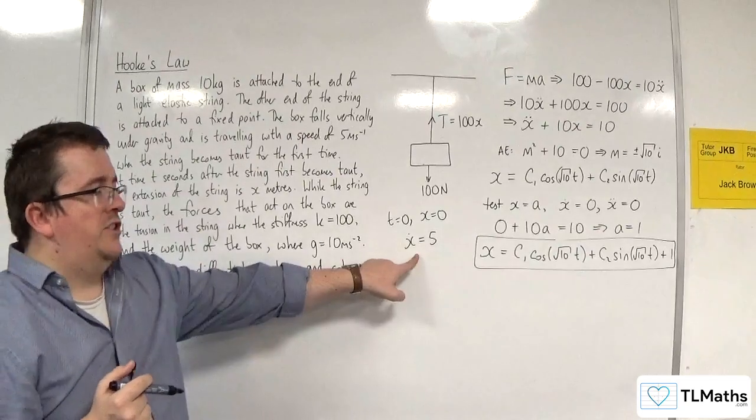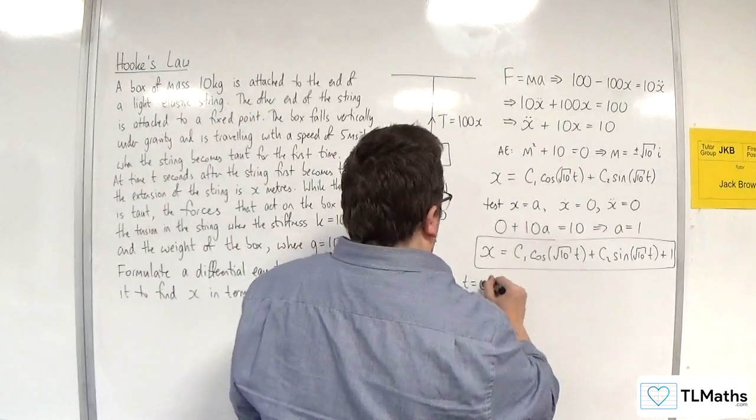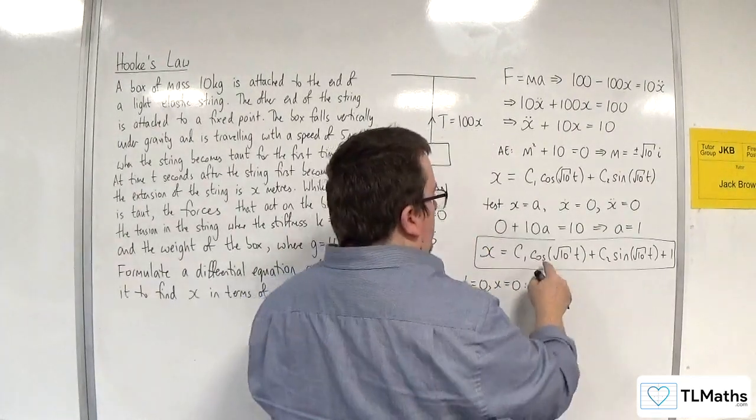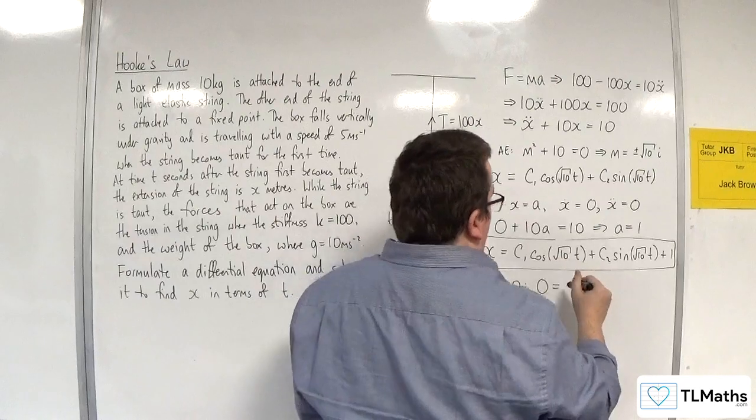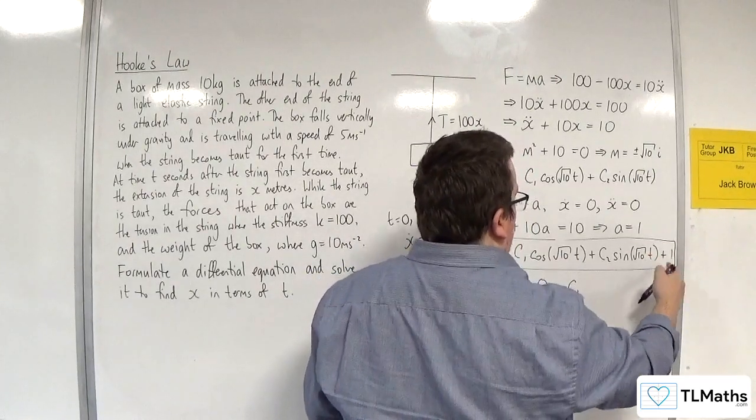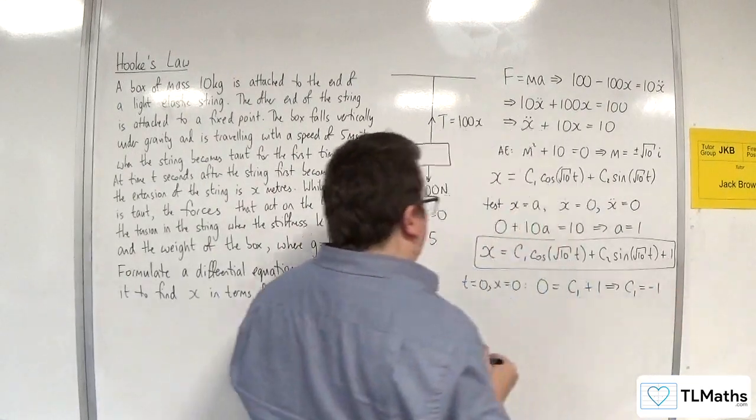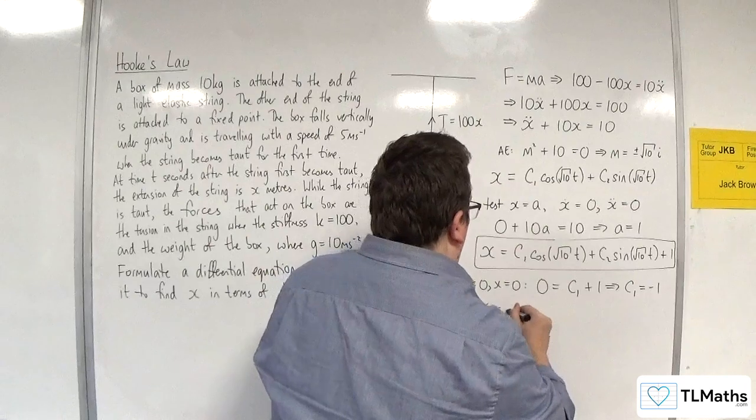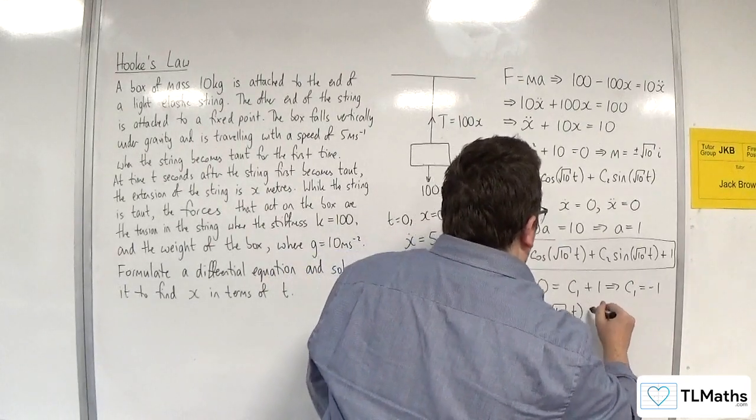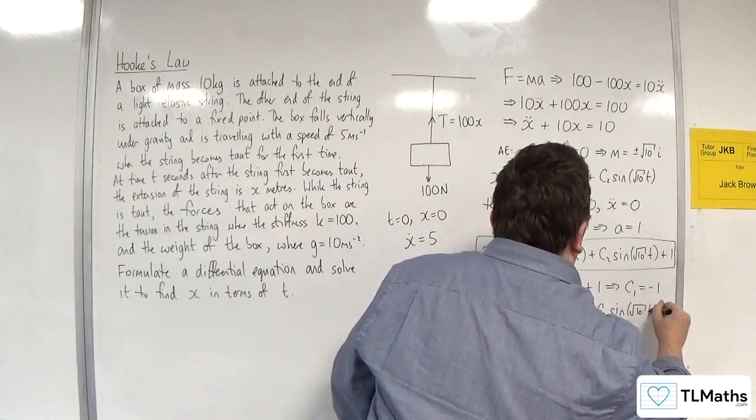So now I can substitute in these bits here. So when t is 0, x is 0. So we're going to get 0 is equal to, cosine of 0 is 1, so we just get c1, that's going to be 0 because sine of 0 is 0, plus 1. So c1 is minus 1. So we now have that x is equal to minus cosine of root 10t plus c2 sine of root 10t plus 1.